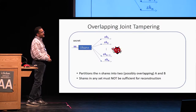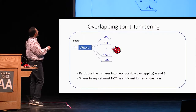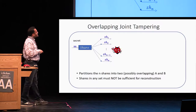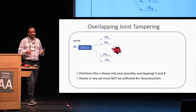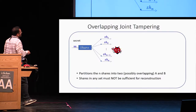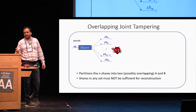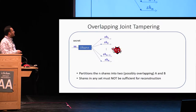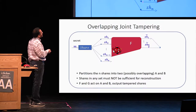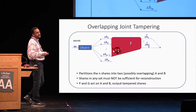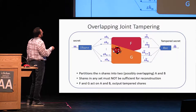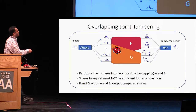Going beyond the joint tampering model, we can consider overlapping joint tampering. In this case, the two sets into which we partition the shares can possibly overlap. The only restriction is that shares in any set must not be sufficient for reconstruction — otherwise the same attack applies. As an example, we could have a function f which takes the first n-minus-one shares and outputs the first half of the tampered shares, and a function g which takes shares 2 to n and outputs the second half.